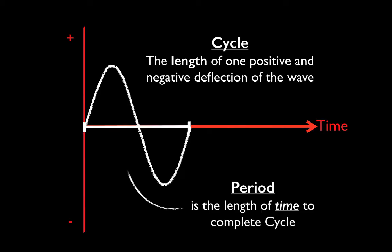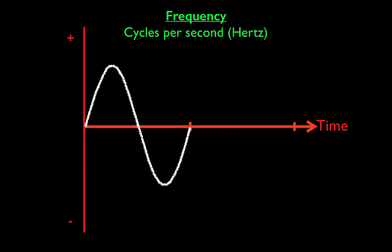When we talk about ultrasound, we consider it as a wave. A cycle is the length over which a wave completes a positive and negative deflection — that's the distance it travels. Period, however, is the length of time it takes to complete that cycle. So period refers to time, while cycle refers to the physical deflection of the wave.